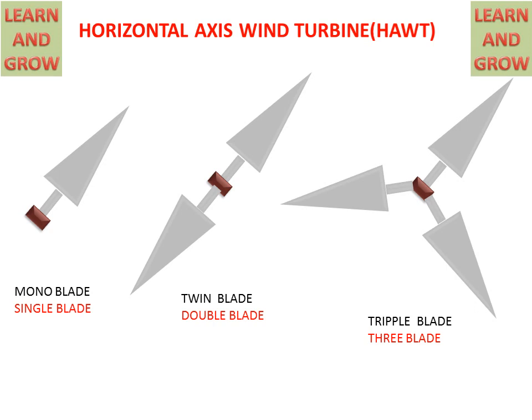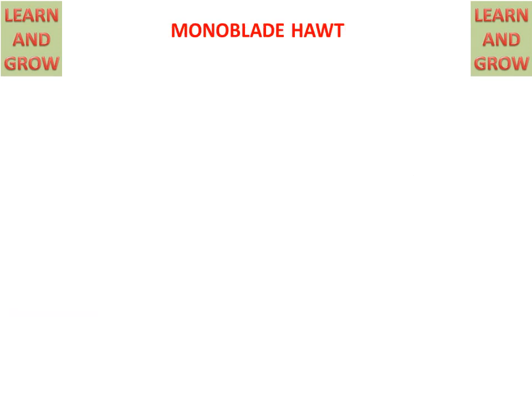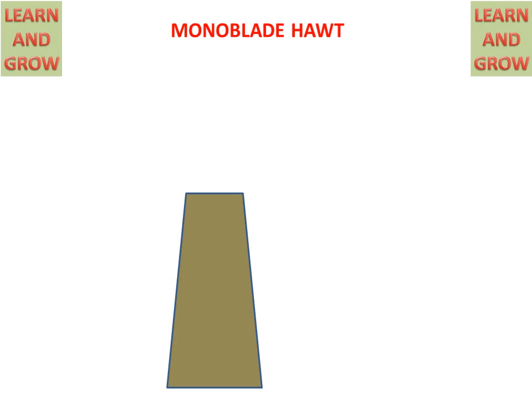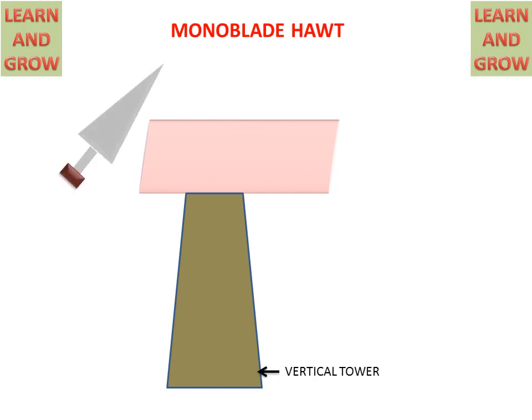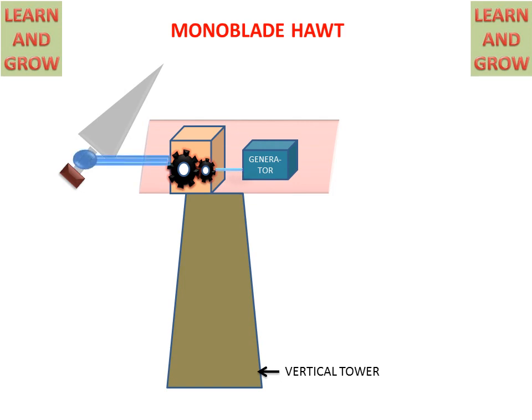Today we will discuss the working of mono blade, twin blade, and triple blade horizontal axis wind turbines. The mono blade HAWT has a vertical tower for giving the required height, and an enclosure in which a gearbox and generator are settled. The mono blade is used for rotation, and a shaft connects the blade, gearbox, and generator.